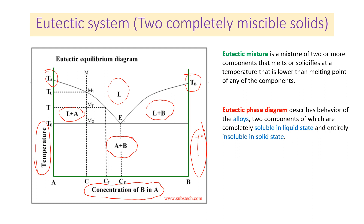This boundary separates the two components. Let's consider the solidification of an alloy at concentration C. When the temperature T is higher than TL, we draw a straight line here. When the temperature is higher than TL, a single liquid phase exists.